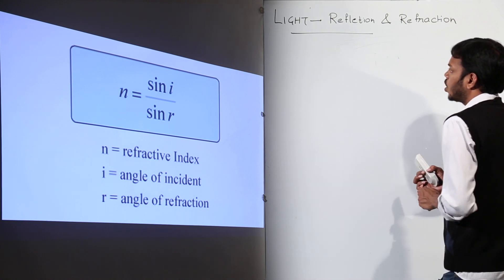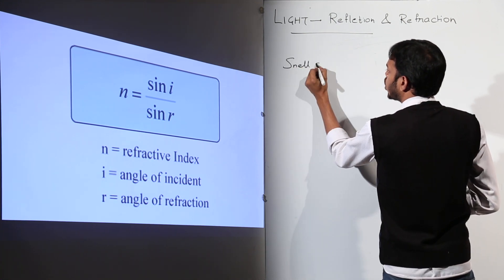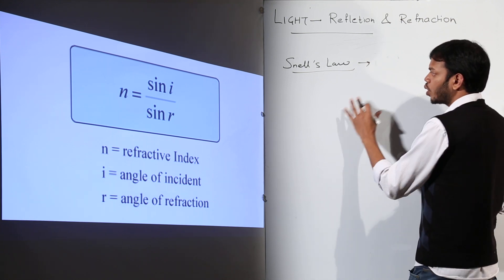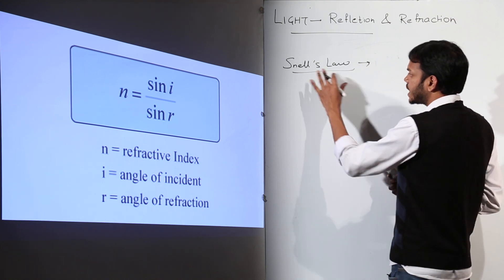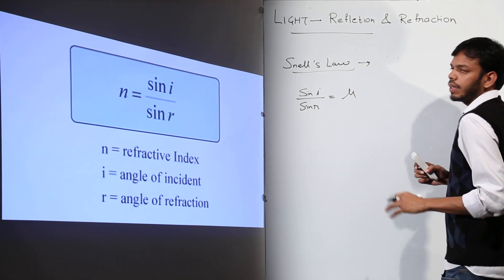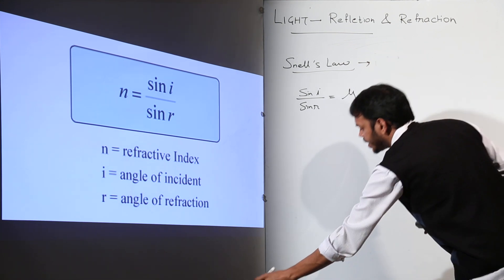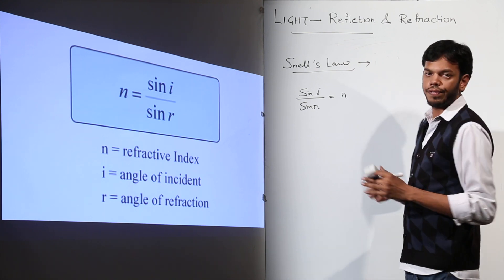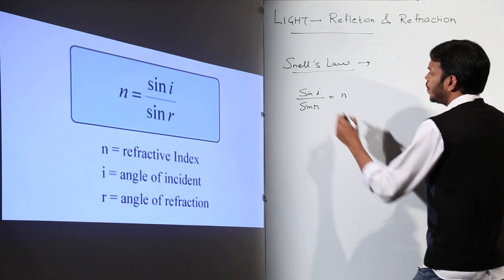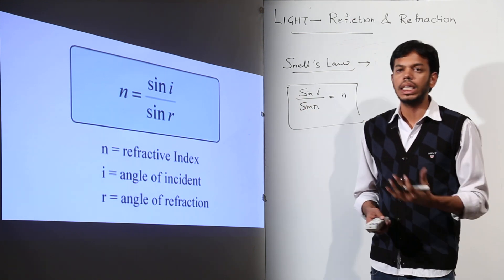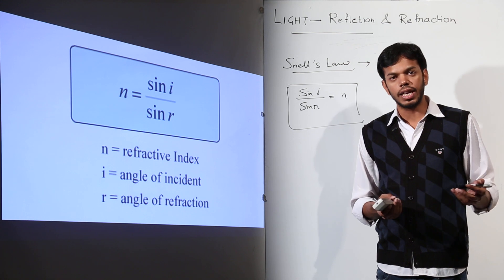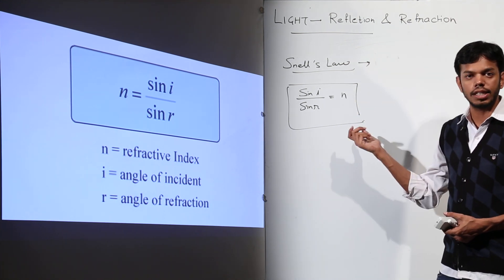This constant ratio is called the refractive index, as named by Snell. Snell's law states that sine I over sine R equals the refractive index, denoted by mu (μ) or n. Refractive index is a physical quantity that tells us how much refraction will occur. Higher the refractive index, more will be the refraction. It depends on the density of the medium.